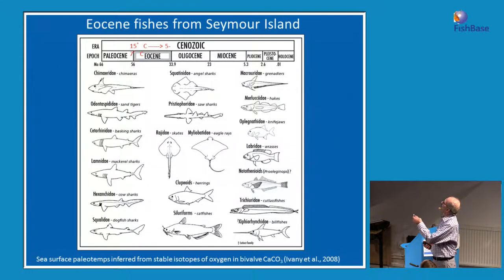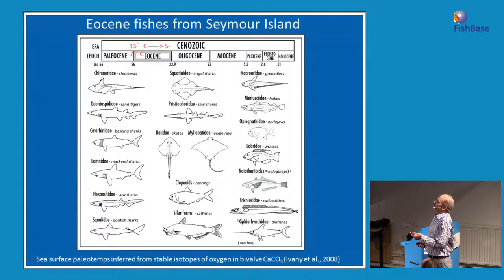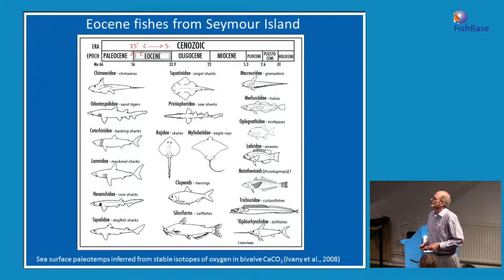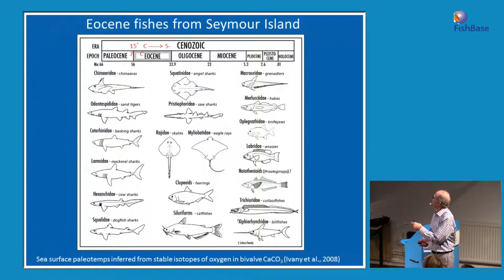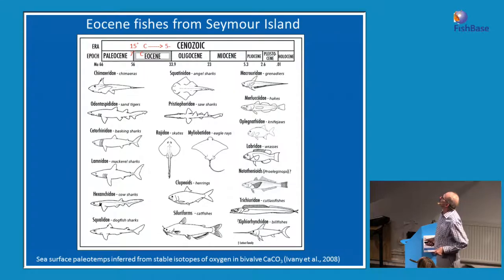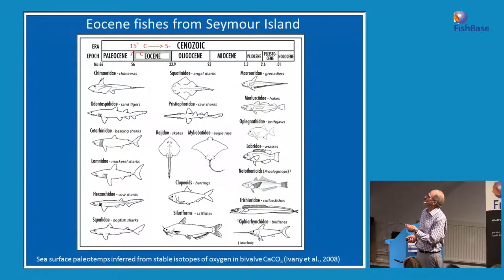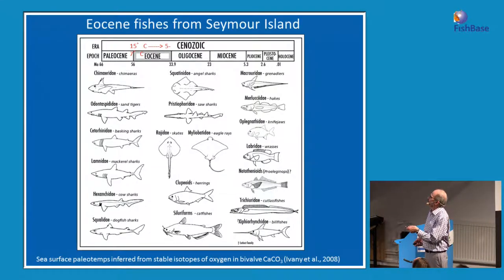These are bony fishes, and what we can say is that in modern Antarctica there are very few cartilaginous fishes. There were herrings, catfishes, gadiforms, wrasses, possibly a notothenioid, and lots of others including an extinct family of bill fishes. So it was a diverse fauna — obviously a very rich ecosystem to support all these sharks, unlike the situation today. During the Eocene, the stable isotope information tells us that the temperature cooled from about 15 to 5 degrees centigrade.